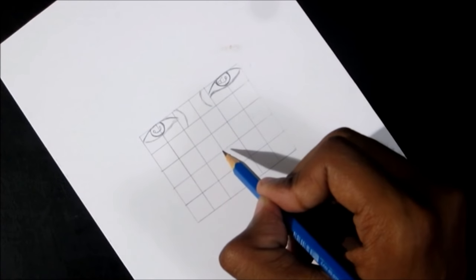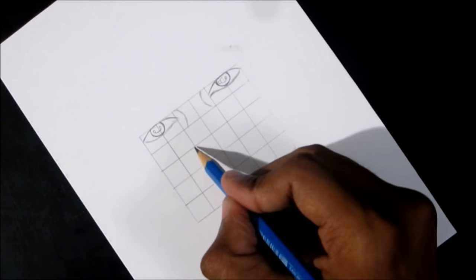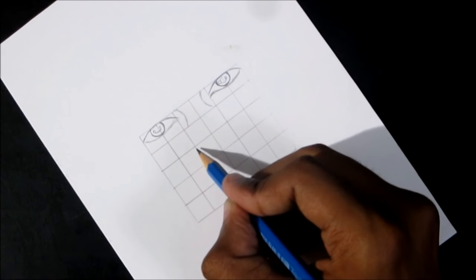The center line will divide the nose into two equal halves. In the third row, draw the nose like this.